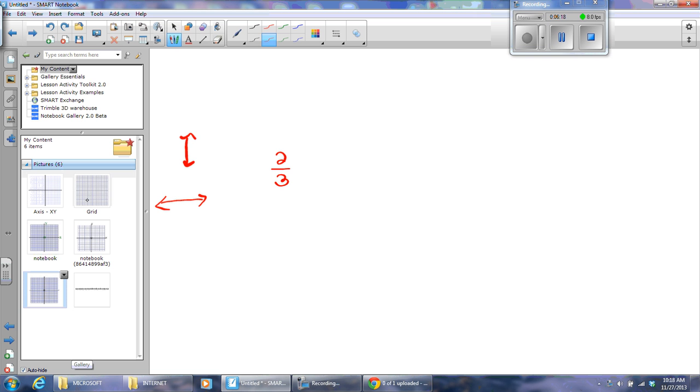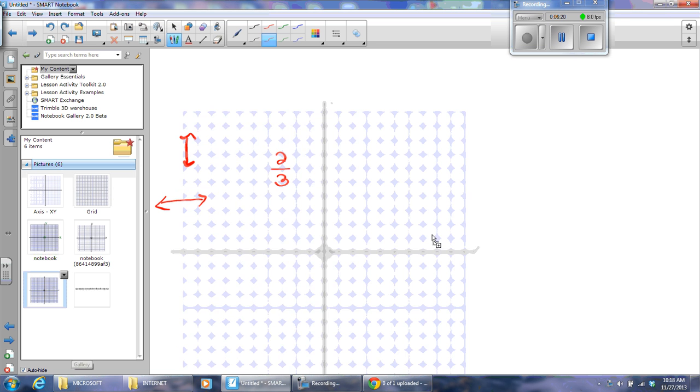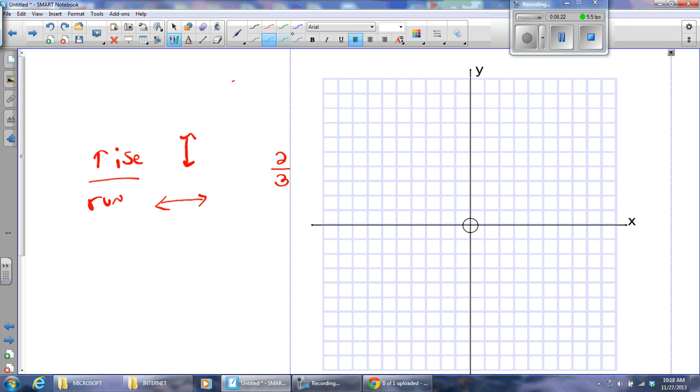So, if I had a slope of, say, two-thirds, then if I was at this point here and my slope were two-thirds, well, I would go up one, two, and then I would run one, two, three, and I'd get another point. I'd go up one, two, and I'd go one, two, three to the right, and there's another point. And if you look, you can see a line starting to form.